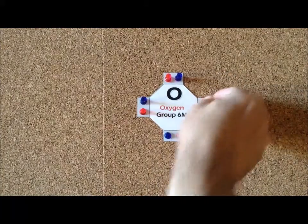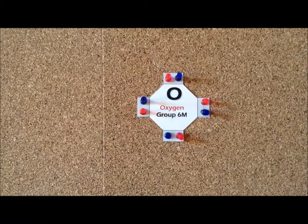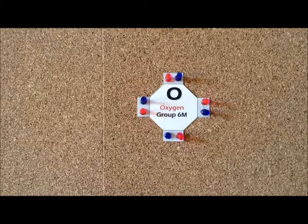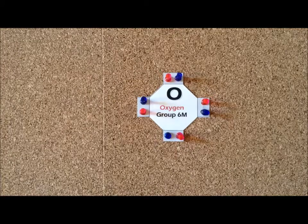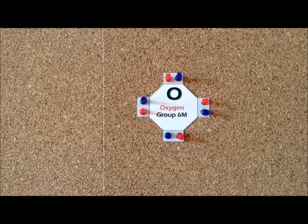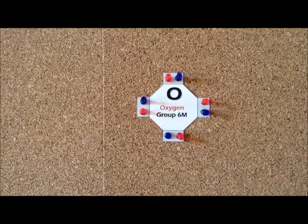So here we have a Lewis dot model of oxide. Based on that model and based on that theory, we would predict that oxide ion would be stable. And it turns out that in ionic compounds it is stable.